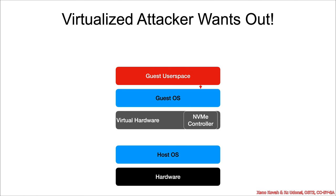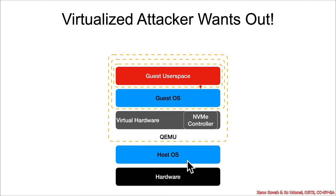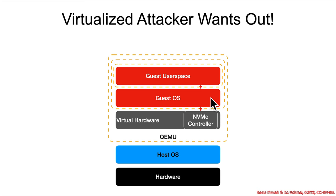In the context of an attack, virtualized attackers want to escape from the virtual machine. Let's assume user space is already compromised — there are attack surfaces between user space and the kernel due to privilege separation. QEMU should treat everything inside the guest operating system as attacker-controlled input. For this section, we'll assume the full kernel is compromised as well inside the VM, meaning the attacker has full privileges and can send arbitrary input to QEMU's NVMe controller.